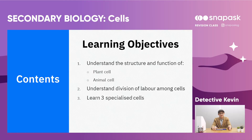First, we need to show an understanding of the structure and function of a typical plant cell as well as an animal cell. Next, we will understand further what division of labour actually means. And we will learn three different kinds of specialised cells and apply these into practice.